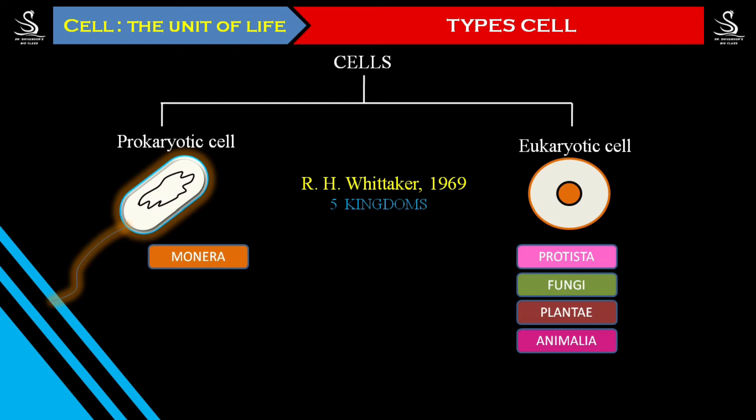We belong to Kingdom Animalia, which means that whatever cells are in our body, all those cells have a nucleus. Of course, there are some exceptions — for example, matured RBCs do not have a nucleus.